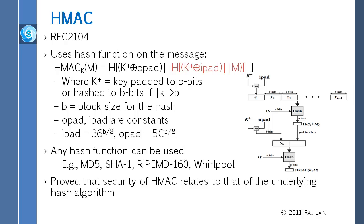Here is the HMAC structure. You take your message, put something in front of it, hash the whole thing, put something in front of the hash, and then hash it again. So you hash it twice — if you were doing MD5, you use that MD5 module twice.